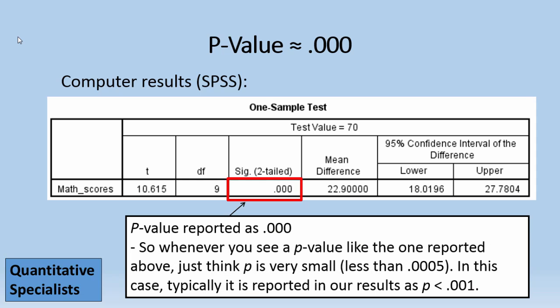So whenever you see a p-value like the one reported above just think that p is very small, technically less than .0005. In this case we typically will report our results when we see a p of .000 as p is less than .001.